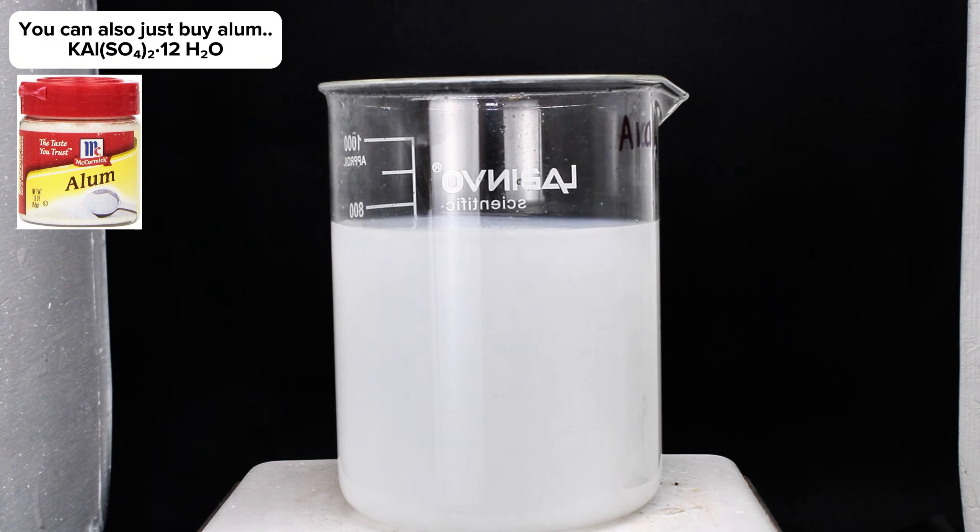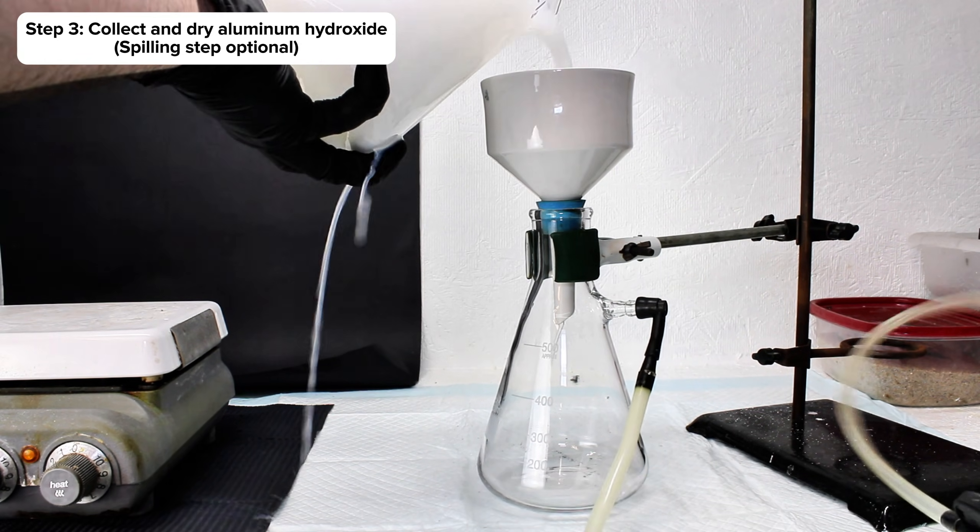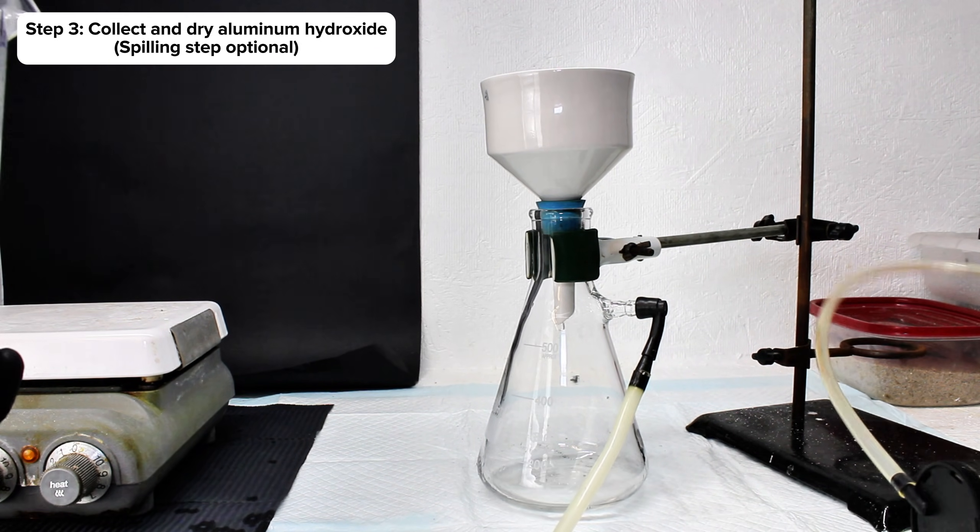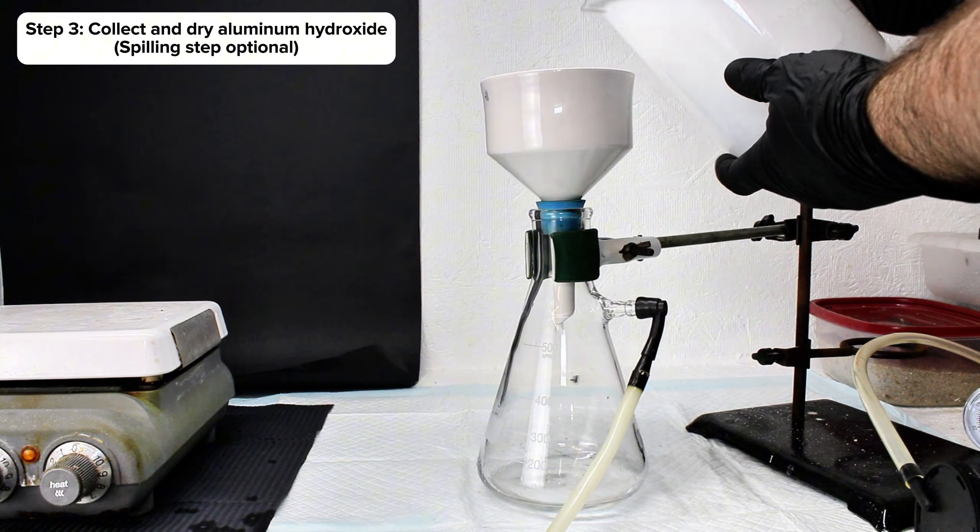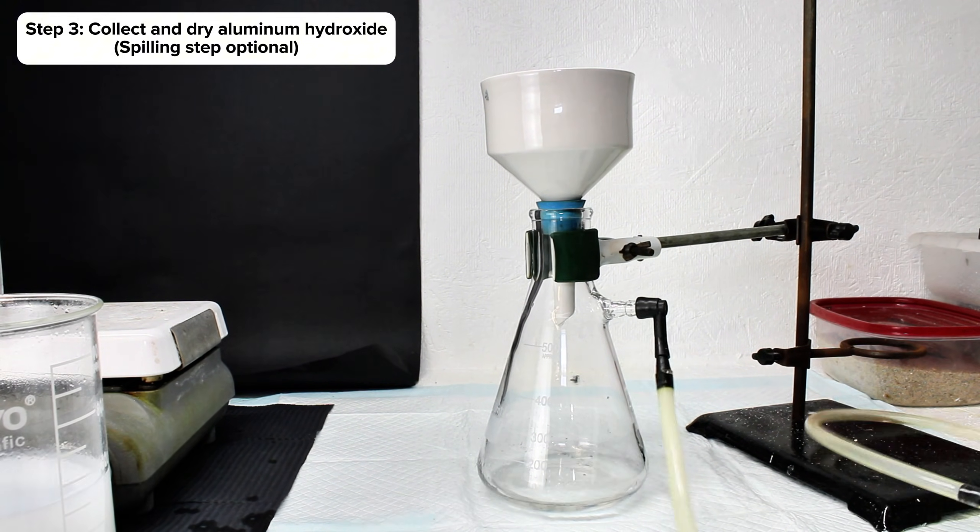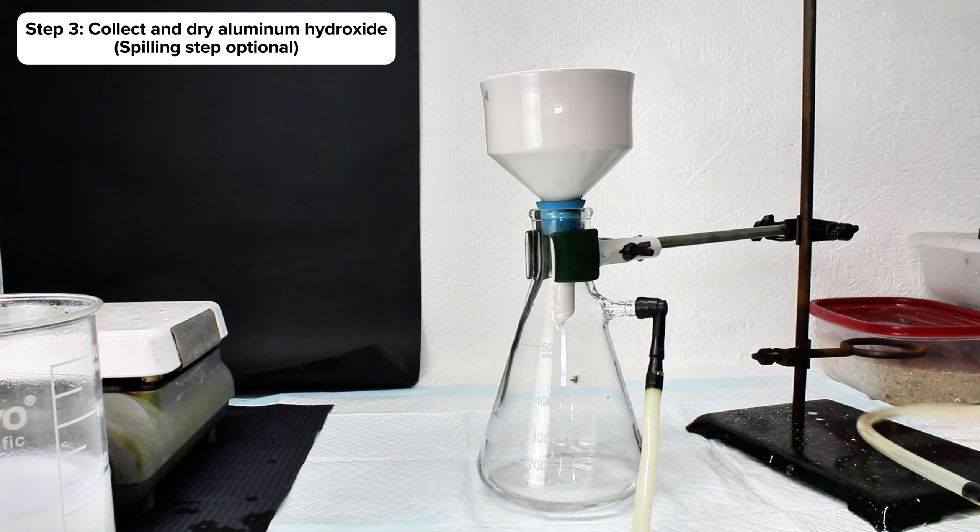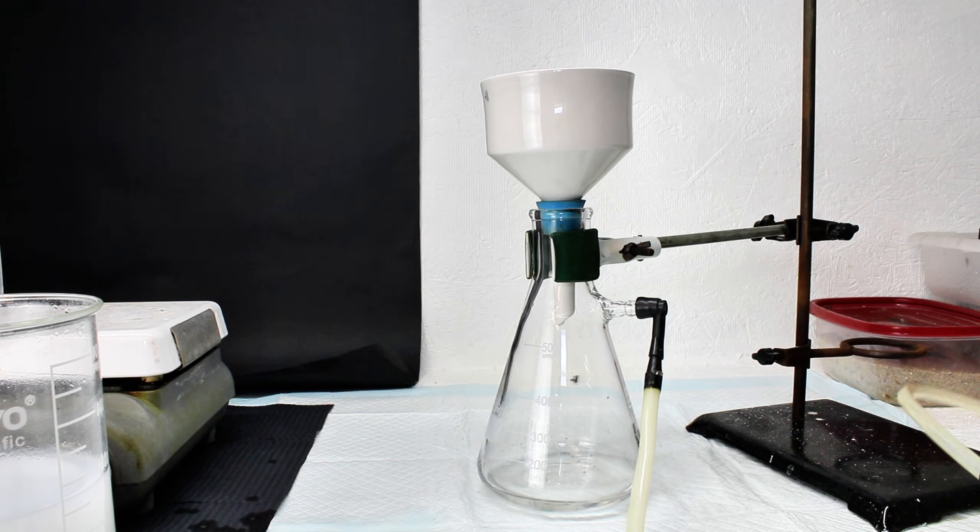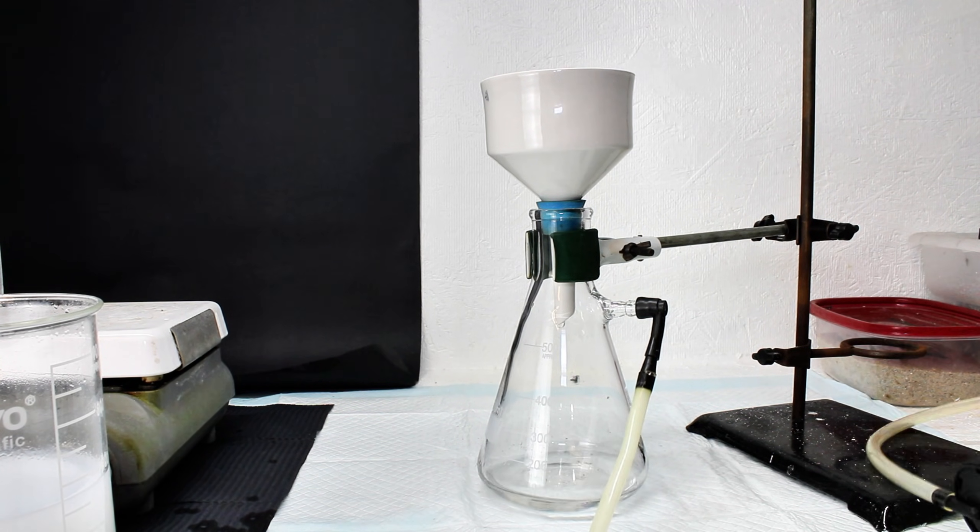Once all the aluminum hydroxide had precipitated, it was next collected by vacuum filtration. This process is pretty annoying due to the gelatinous consistency of aluminum hydroxide, but with enough patience, I was left with a thick slab of still very wet aluminum hydroxide.